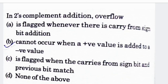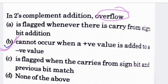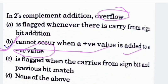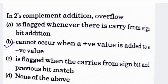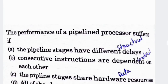Next question: in two's complement addition, overflow — option A: is flagged whenever there is a carry from the sign bit addition, option B: cannot occur when a positive value is added to a negative value, option C: is flagged when carries from sign bit and previous bit match, option D: none of the above. Option B is correct — two's complement overflow cannot occur when a positive value is added to a negative value.